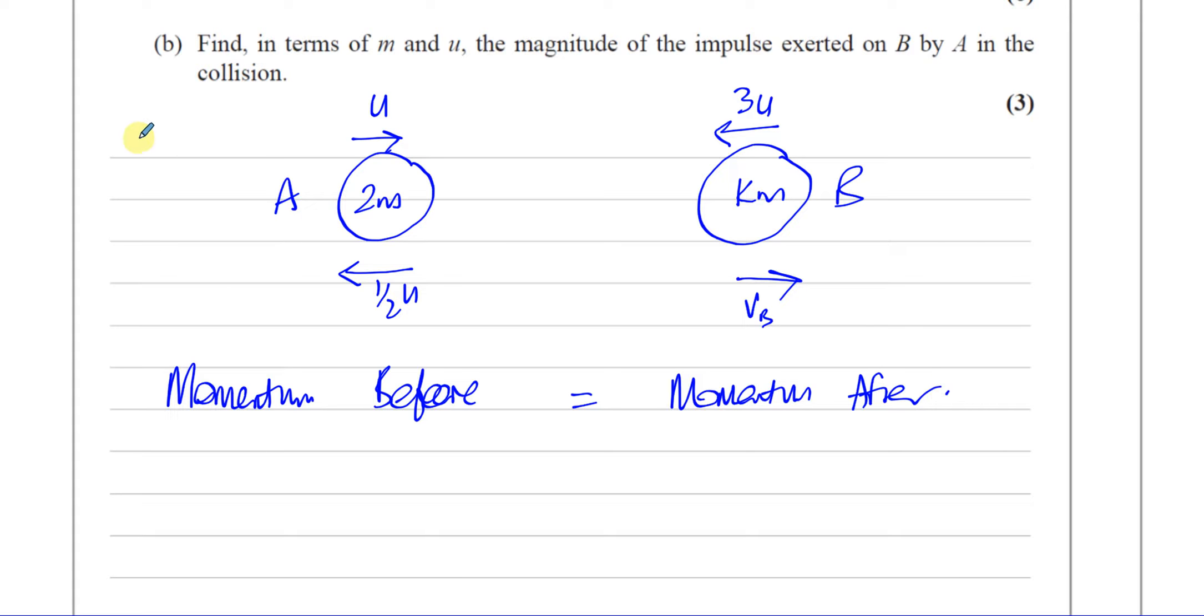Remember, this here is before and this here is after. So before the collision, you've got the mass times the velocity.